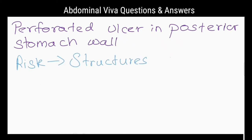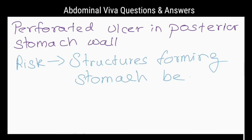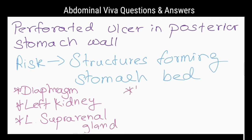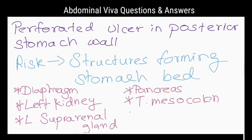What are the structures at risk of being damaged by a perforated gastric ulcer on the posterior aspect of the body of the stomach? The diaphragm, left kidney, left suprarenal gland, pancreas, transverse mesocolon, splenic flexure of colon, and splenic artery.